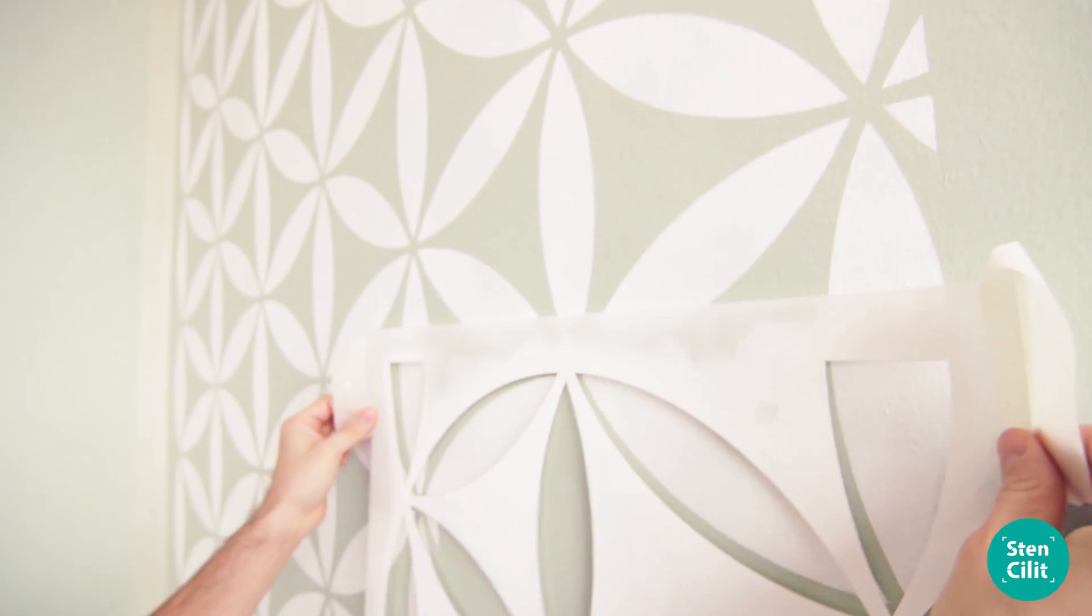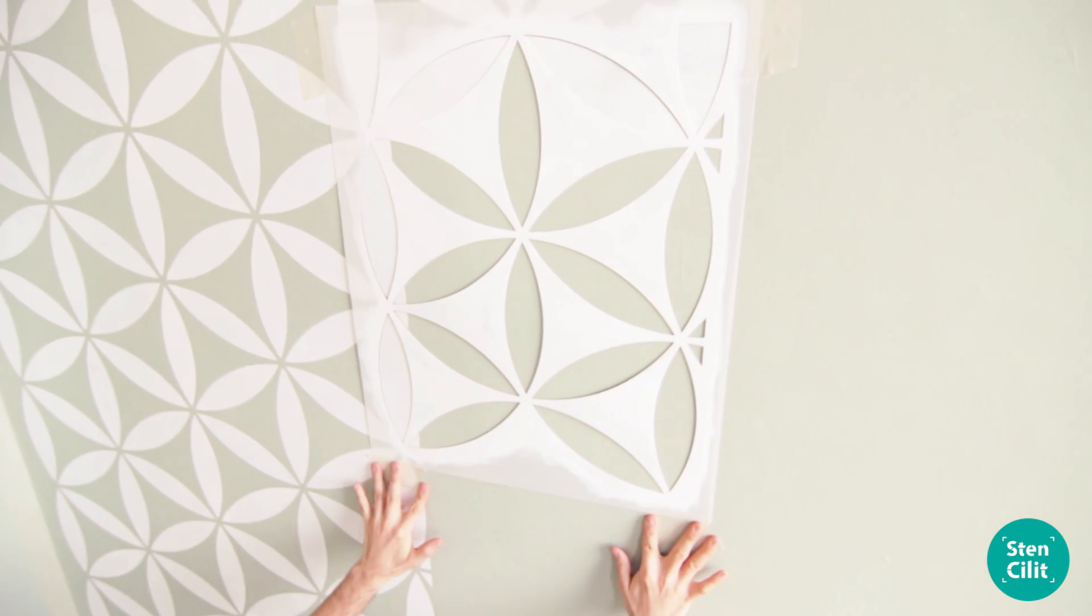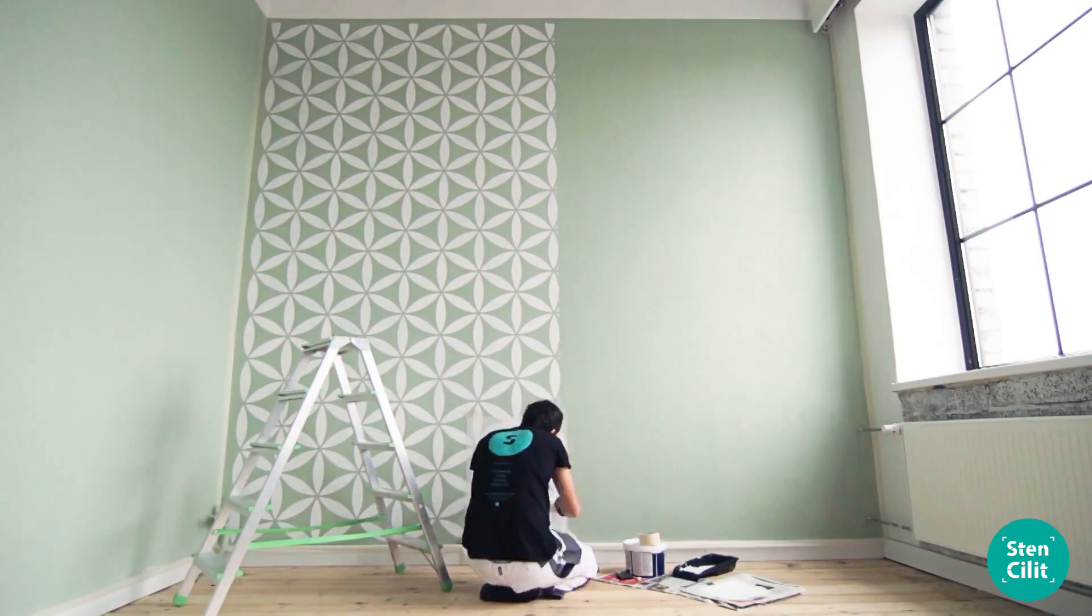You can reposition the stencil straight away. Stencil-lit stencils are designed to lock in with itself when repositioning. Connection points are always in the corners. No need to wait until it dries. The thin layer of paint will dry very quickly.